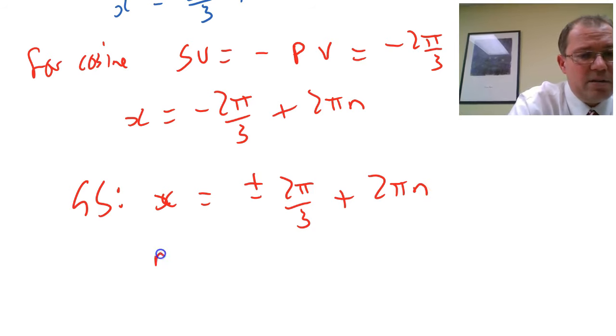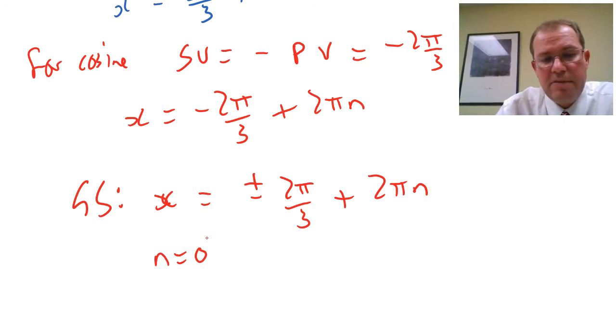And then you can put various values in. If you put n equals zero in, we get the value two pi over three minus two pi over three. Put n equals one in, we'll get all the other answers, etc.